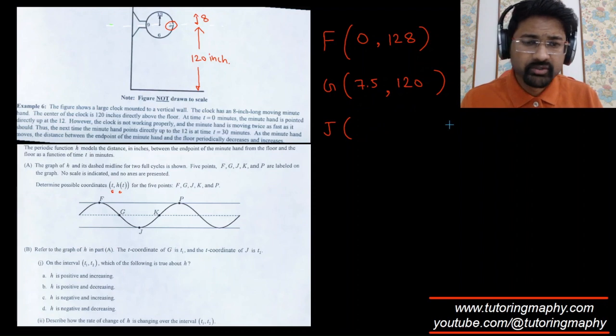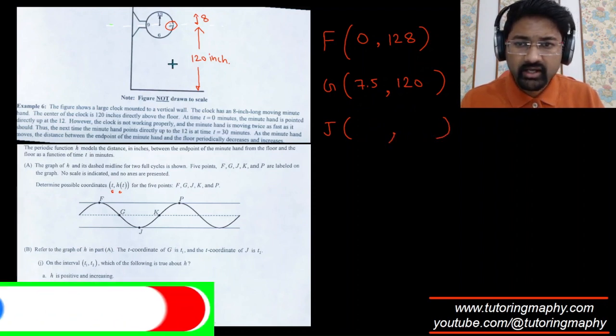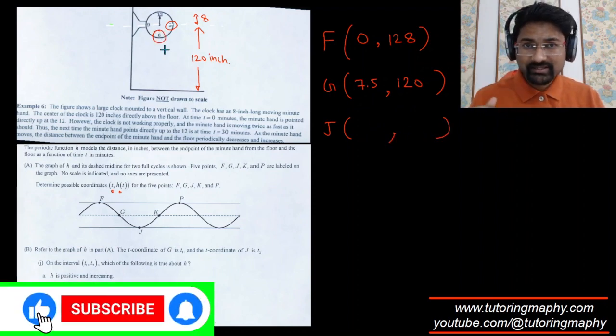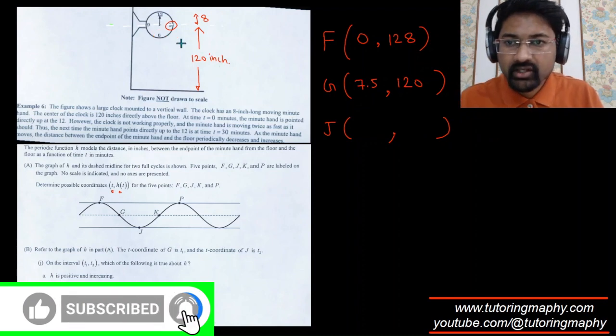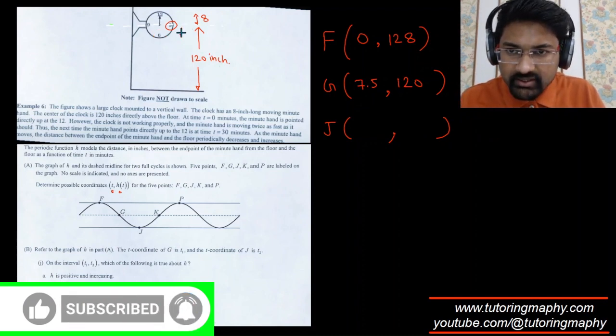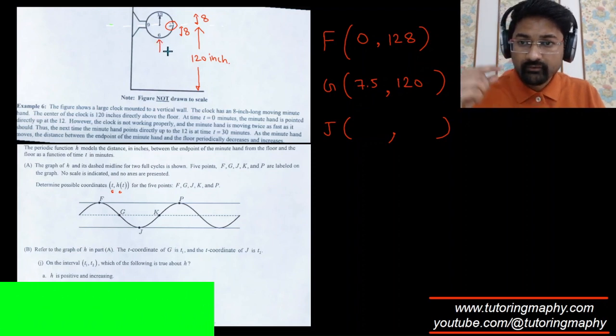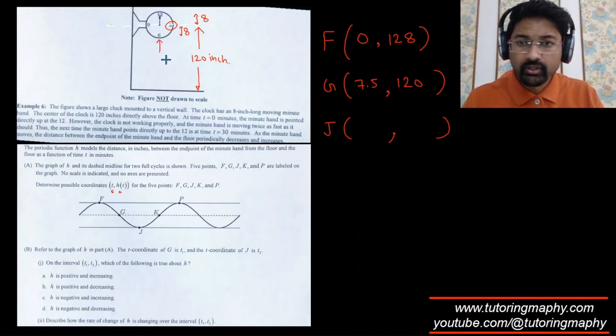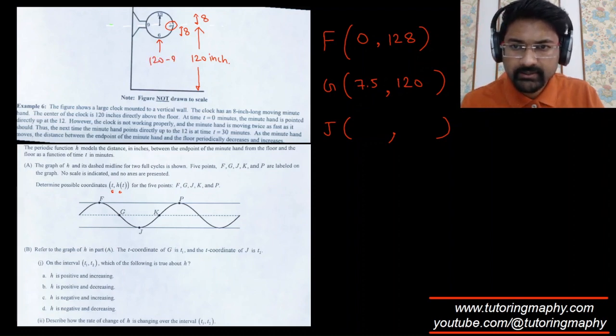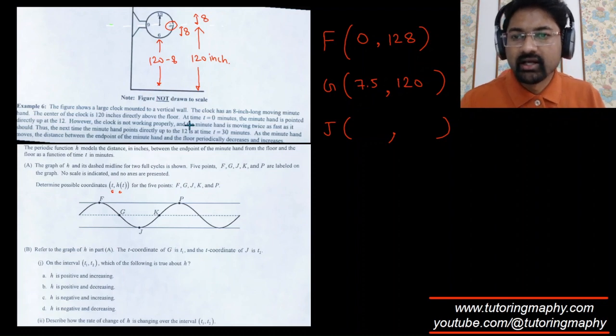J is the minimum point when it is at 6. The height is 120 minus 8, which is 112. And the time is another 7.5 minutes, which is 15 minutes total.